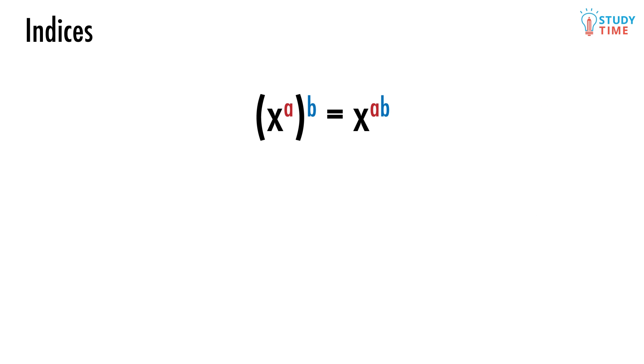Here's how the third and final index law works. x to the power of a to the power of b equals x to the power of a times b. This is useful when an index gets raised to another index, like in this problem.